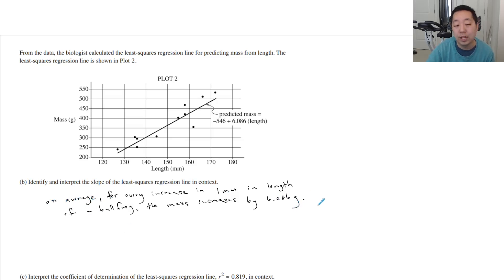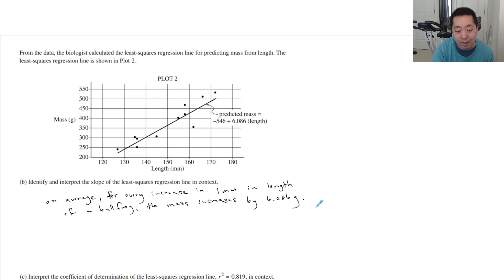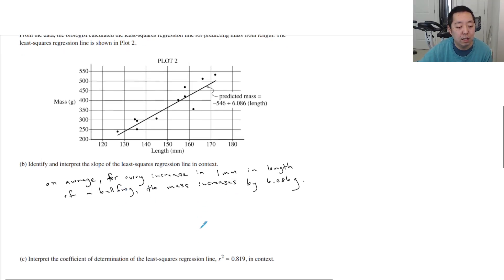You want to say 'on average' — you can put it somewhere in the sentence or at the end — or say 'the predicted value of the mass increases by that amount,' something indicating it's not 100% guaranteed. It's not like one millimeter longer means it's definitely 6.086 grams more — it's approximately, on average, or predicted. I usually like to use 'on average,' some people like to use 'predicted' — either is fine.